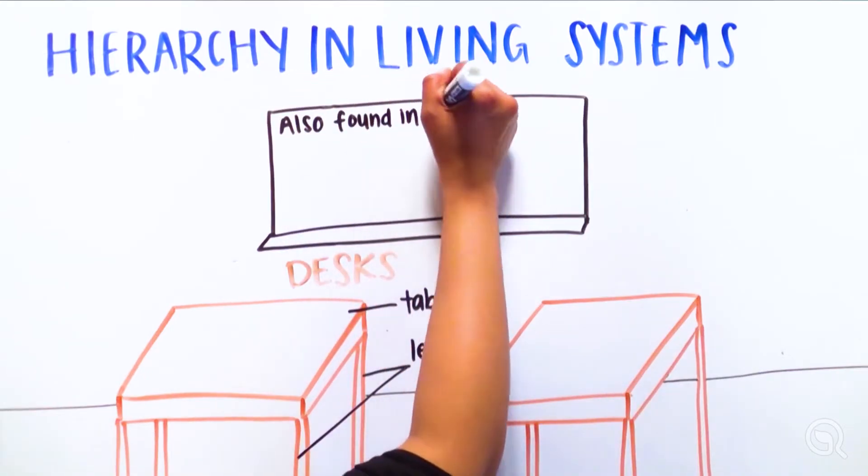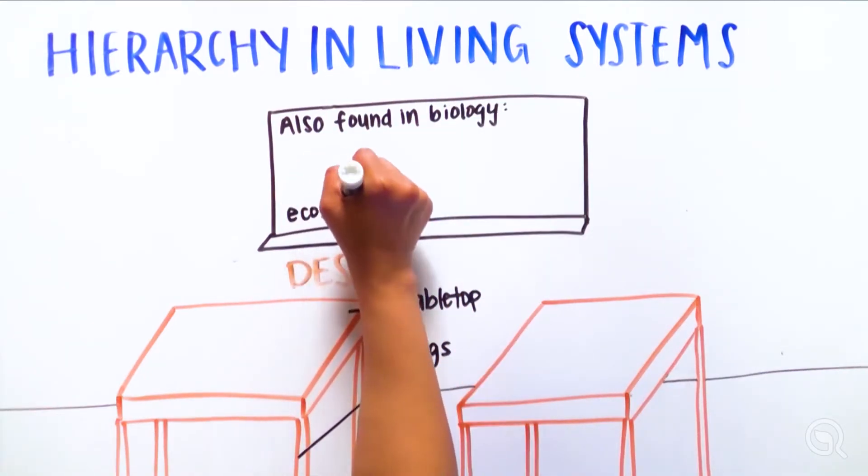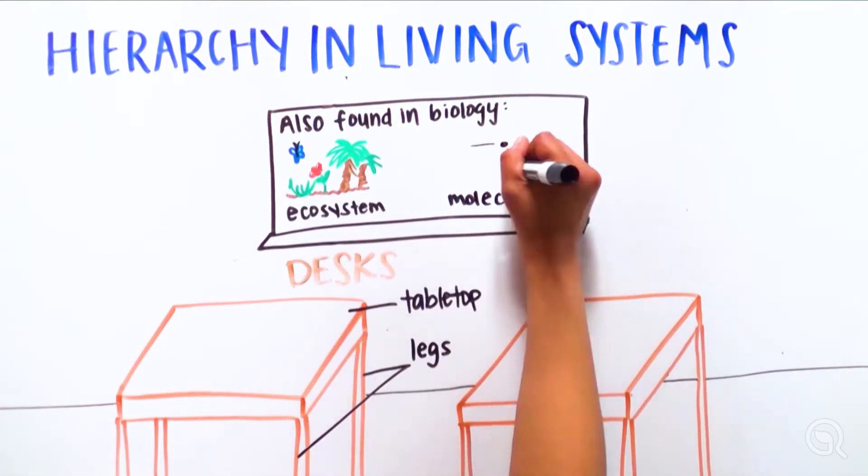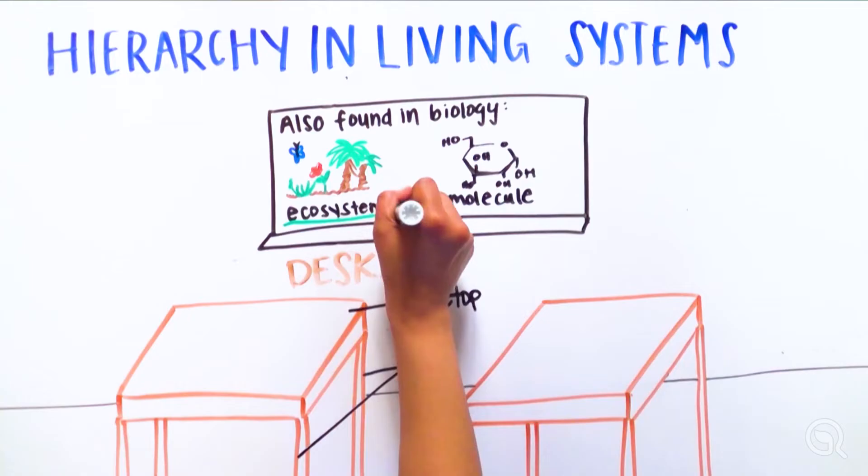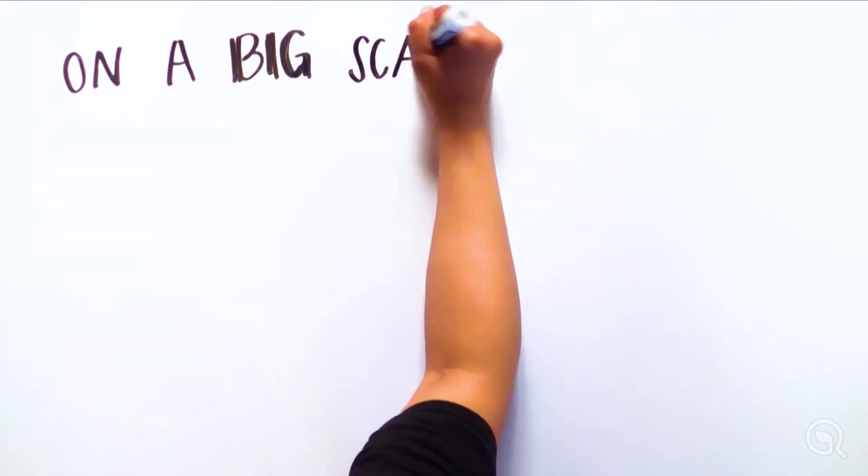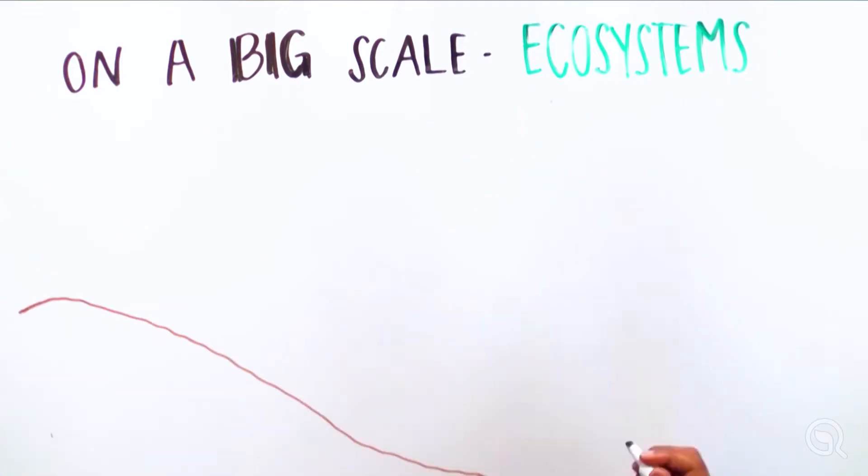This hierarchy is also found in biology. From an ecosystem to a molecule, life contains basic units of structure and function, which is essential to understand how a system works. Let's start big on the scale of living things and look at an ecosystem.